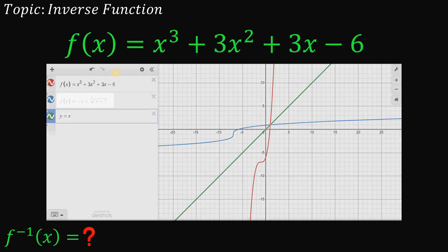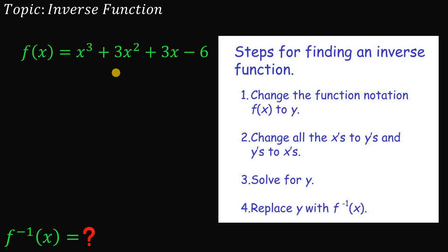Now, to begin with, what is the steps in finding the inverse of a function? So to find the inverse of a function, we follow these four steps. Change the function notation f(x) to y. Change all x to y's and y's to x. Third is solve for y. And the fourth one is replace y with f inverse of x.